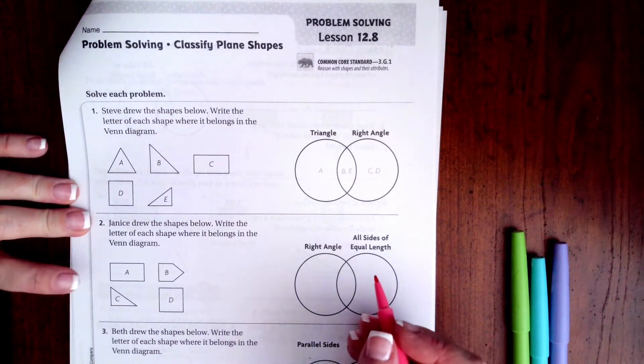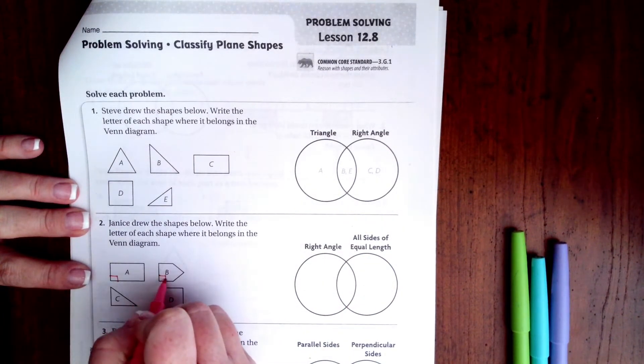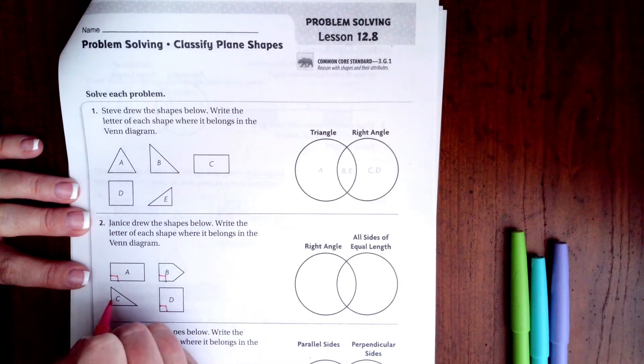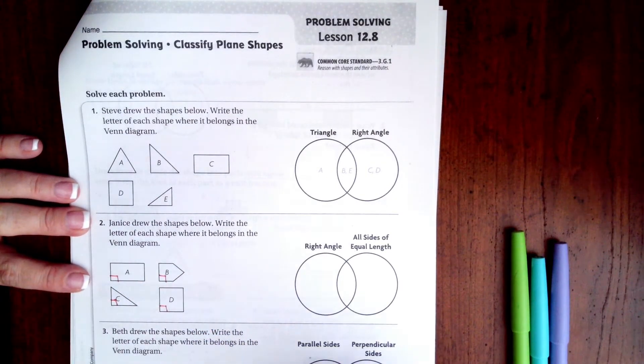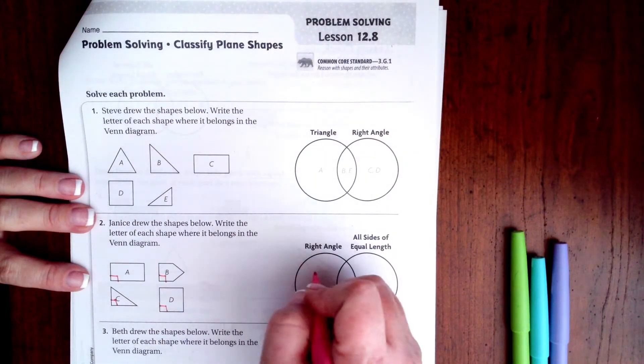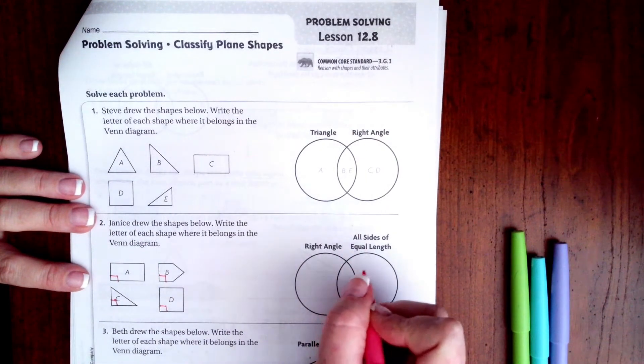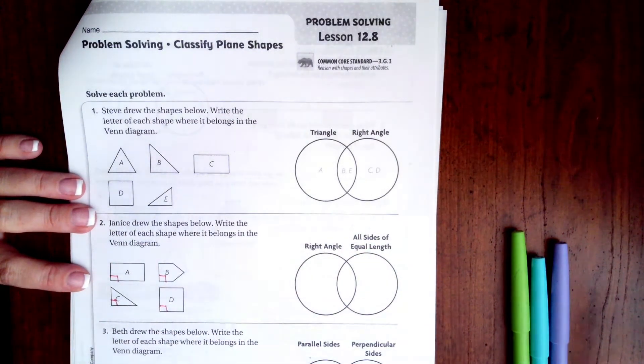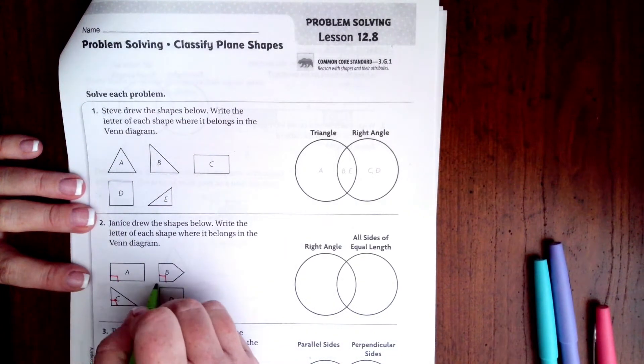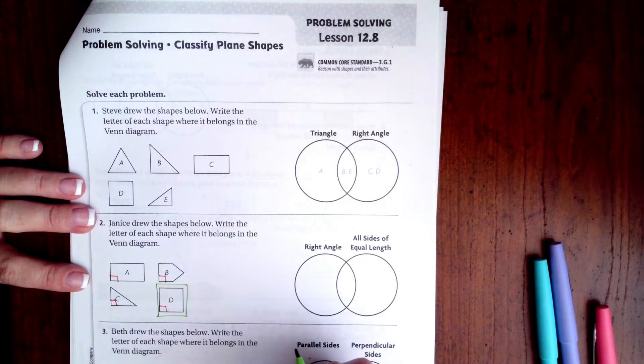First the right angles. This one would have a right angle, and this one would have a right angle, as with this one and that one. Now I need to see which ones have all sides of equal length. The only one with all sides of equal length is this one right here.